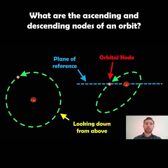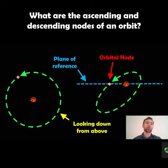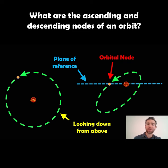Welcome to this video. My name is Phil and I am a senior lecturer in astrophysics at the University of Lincoln. In this video I wanted to introduce what orbital nodes are. This is one of the orbital elements of an orbit, and they're quite important for getting the configuration of an orbit.